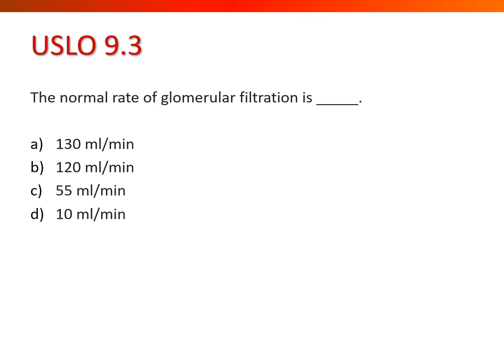What is the normal glomerular filtration rate? There's a range when you look at labs, but the textbook teaches one particular number. Hopefully you said that is 120 milliliters per minute.